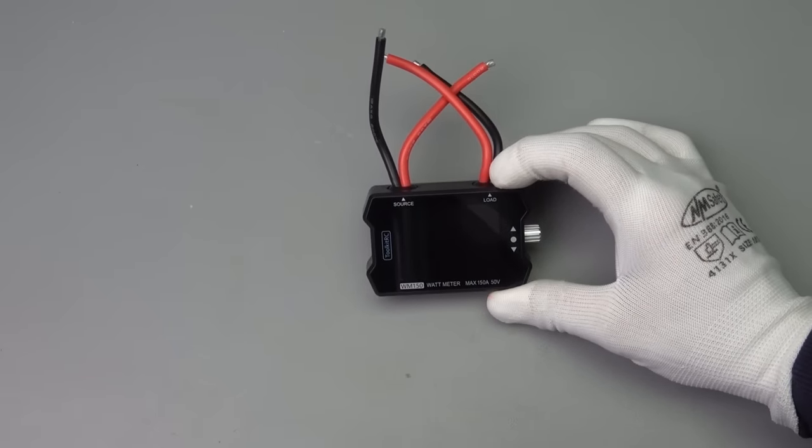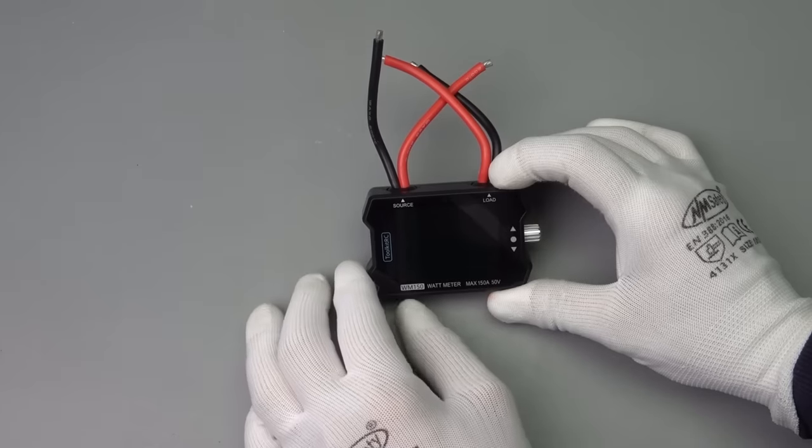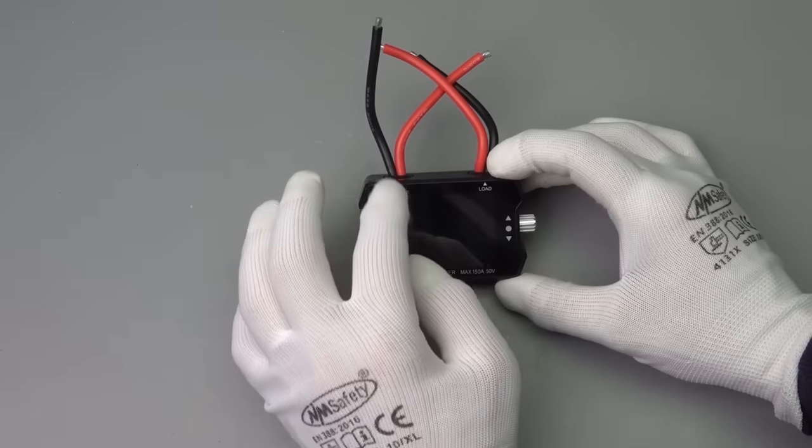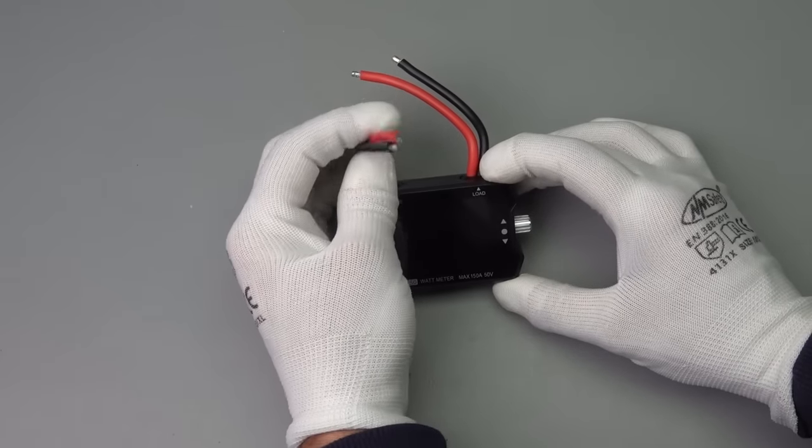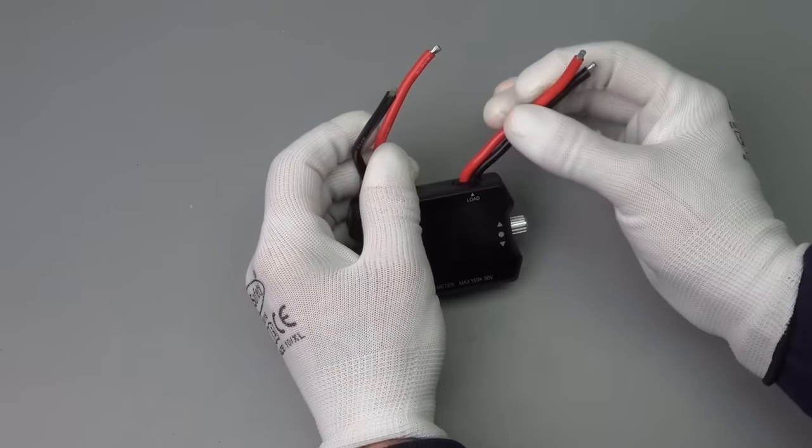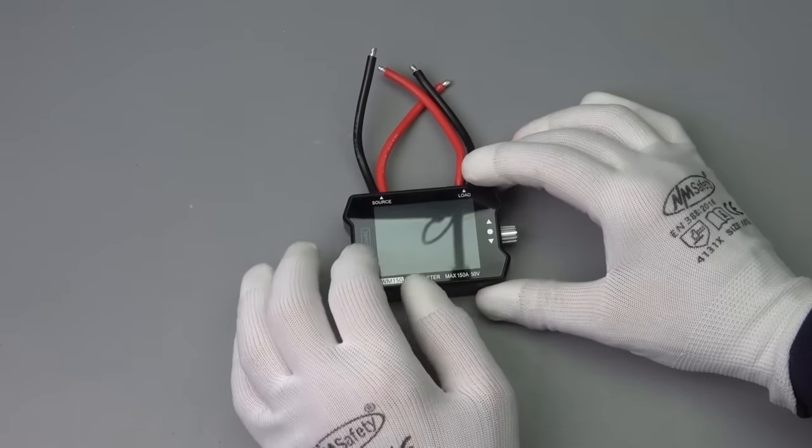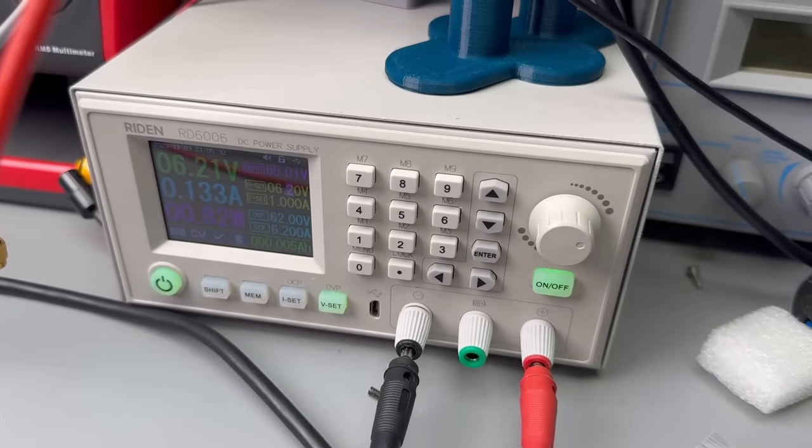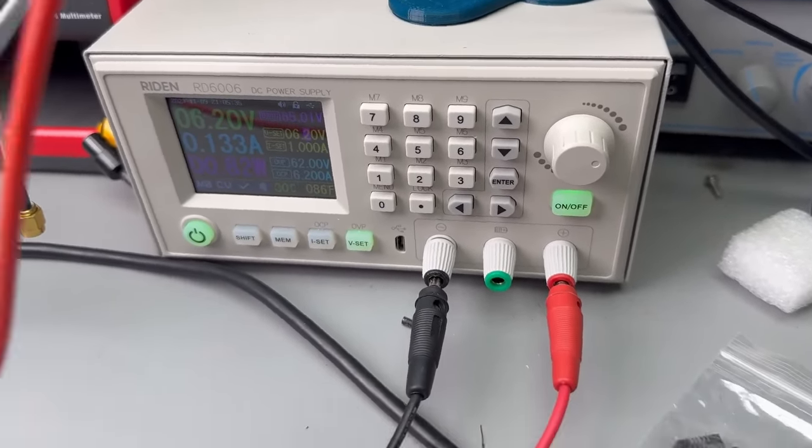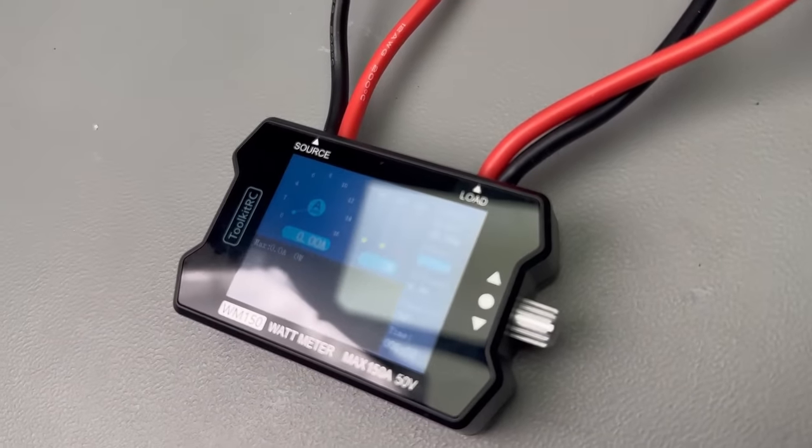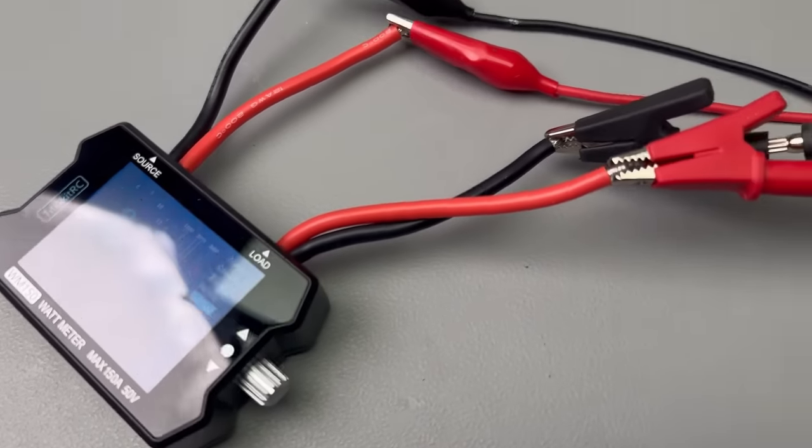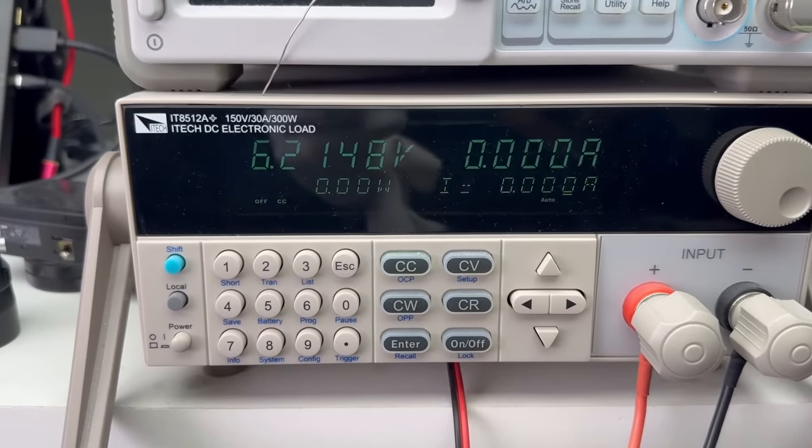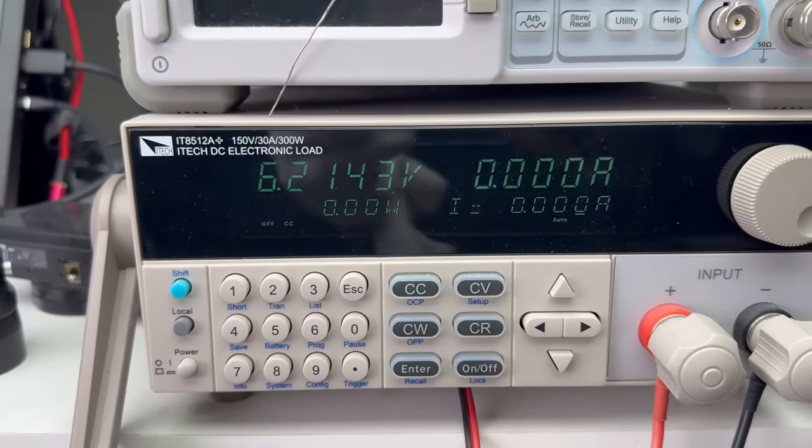Staying with the topic of power, we have this wattmeter for 150A and 50V. Here is the source input with quite thick cables and here is the load. So let's check what it can do. I connected it to my power supply and you see 6.2V, this is when it starts to work.